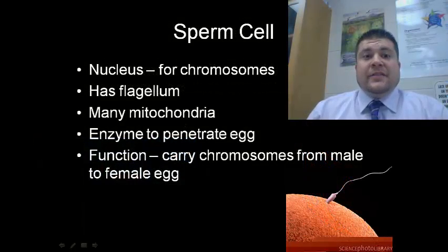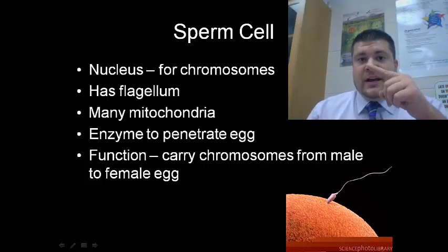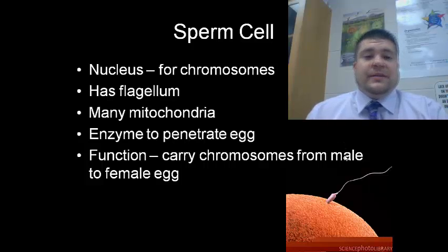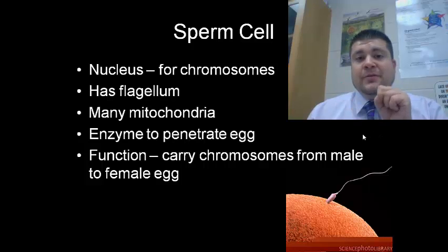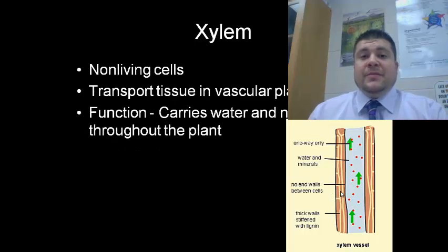Sperm cells have a nucleus for the chromosomes that make us who we are. They have a flagellum, which acts like a whip-like propeller to move the sperm forward. They also have many mitochondria and an enzyme on the capsule that will penetrate the egg. The function of the sperm cell is to carry chromosomes from the male to the female egg.